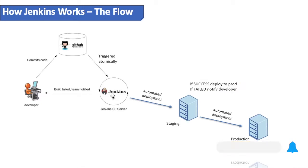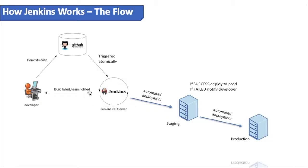Jenkins will build the code, run unit testing and quality checks, and then produce the build output — your binary file. That file will then be deployed into your staging environment for further testing, meaning it will be delivered to the test server.